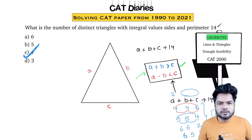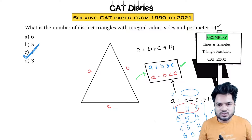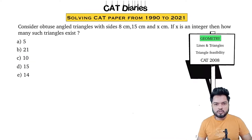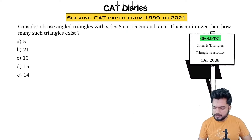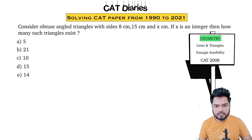I would rate this as an easy question. The only scope for making a mistake is in writing the cases. If you know the property and can write the cases logically, you can reach the answer quite easily. Let us now see the second problem on triangle feasibility — this problem appeared in CAT 2008. Let's understand how this problem is different from the previous one and what you need to adapt to reach the answer.